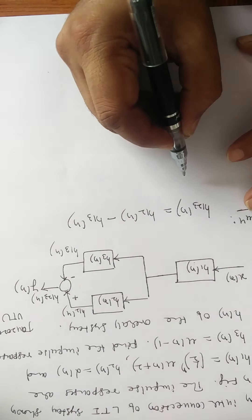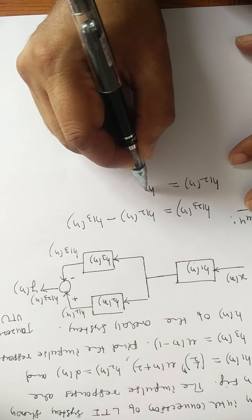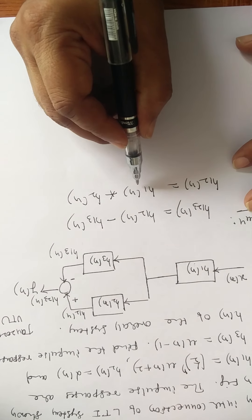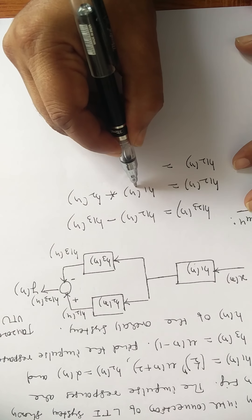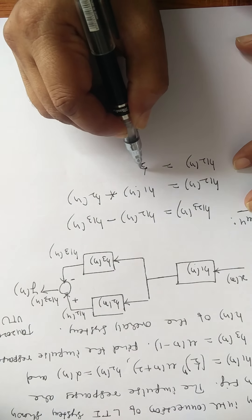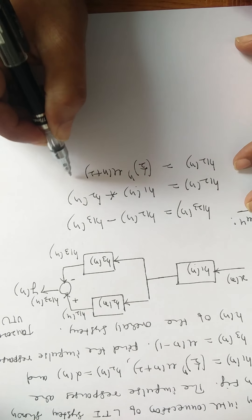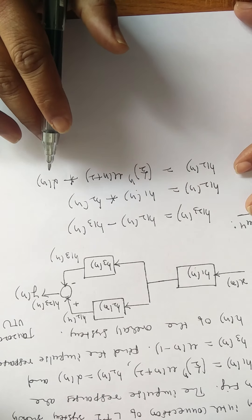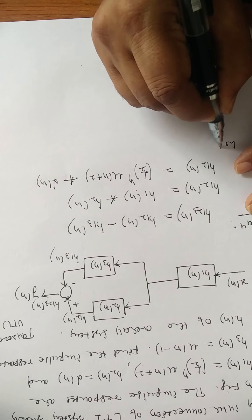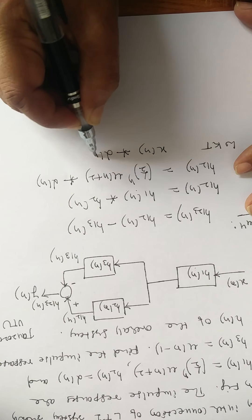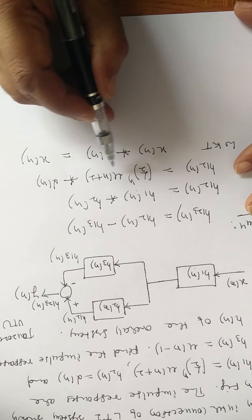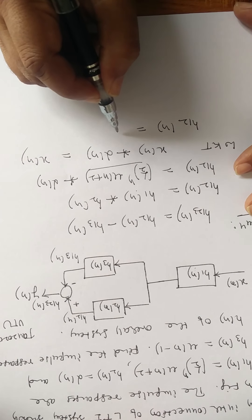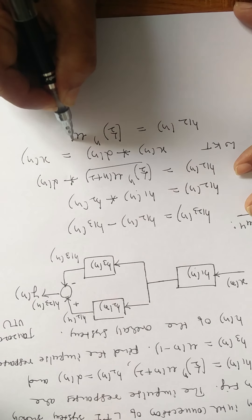What is h12(n)? h12(n) = h1(n) * h2(n). h1(n) is given as (1/2)^n · u(n+2), linearly convolved with h2(n) = δ(n). Any signal convolved with the unit impulse function δ(n) gives the same signal — that is, x(n) * δ(n) = x(n). Therefore, h12(n) = (1/2)^n · u(n+2).